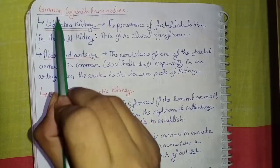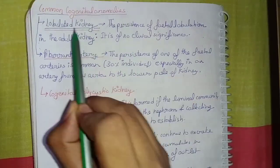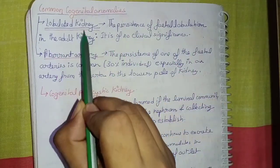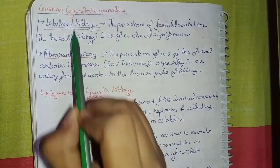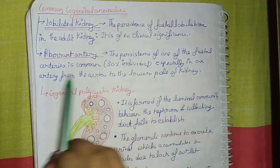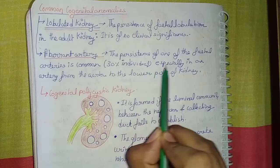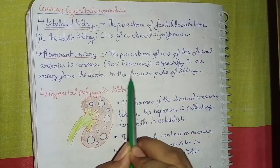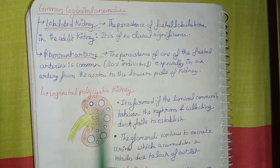Coming to common congenital anomalies. Lobulated kidney: the persistence of fetal lobulation in the adult kidney — it is of no clinical significance. Aberrant artery: the persistence of one of the fetal arteries, common in 30% of individuals, especially an artery from the aorta to the lower pole of the kidney. Congenital polycystic kidney: found if the luminal continuity between the nephrons and collecting duct fails to establish; the glomeruli continue to excrete urine which accumulates in tubules due to lack of an outlet.